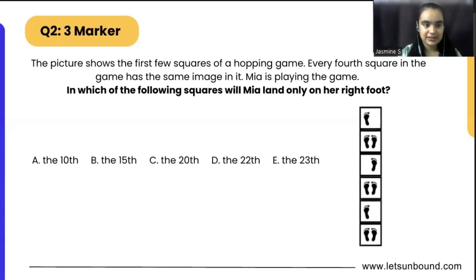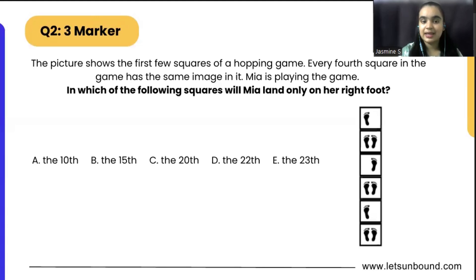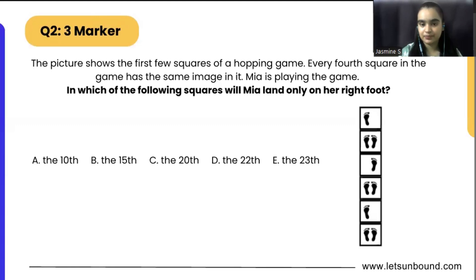The second question says the picture shows the first few squares of a hopping game. Every fourth square in the game has the same image in it. Mia is playing the game. In which of the following squares will Mia land only on her right foot?